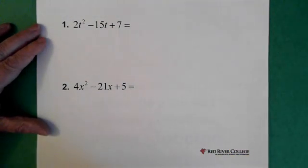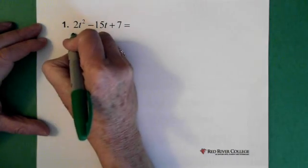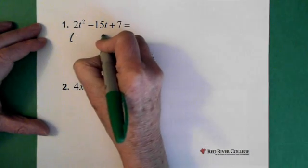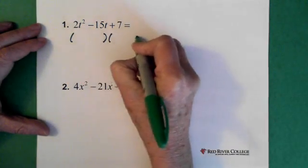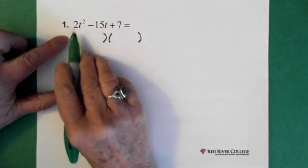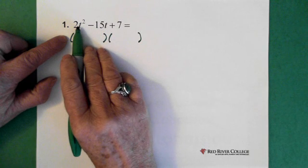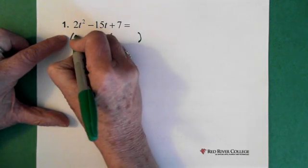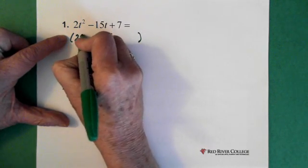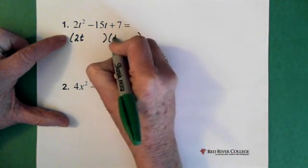Let's try some other questions. First one: 2t squared minus 15t plus 7. Again, starting with the brackets. Then I ask myself, what times what here will give me 2t squared? So I'm just going to put my 2t here and my t there.